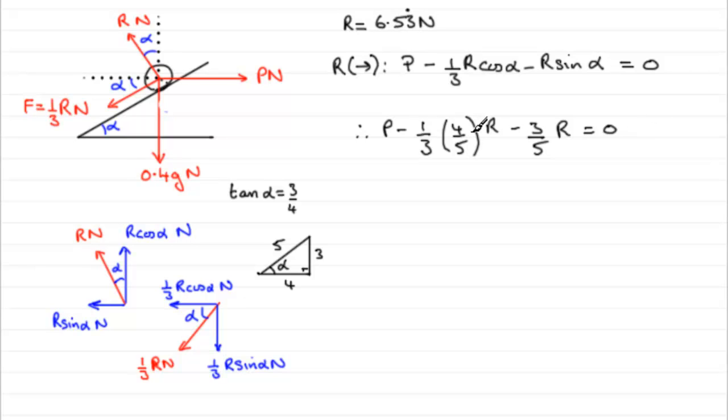So if we work this out, minus four fifteenths we've got here, minus a further three fifths. Well, if you do that, you end up with thirteen fifteenths. So we've got, therefore, P minus thirteen fifteenths of R equals zero.